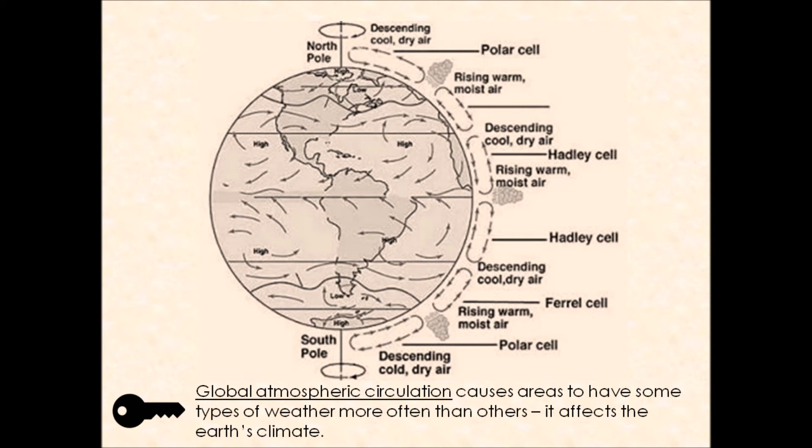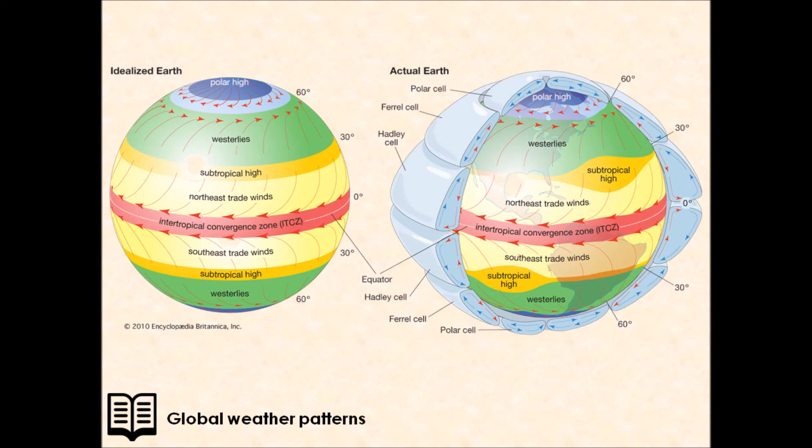There are three main ways that this occurs. We've got global circulation cells, which is what we're going to be looking at today in association with global atmospheric circulation. We've got ocean currents and we've got jet streams. So let's focus in on global atmospheric circulation.